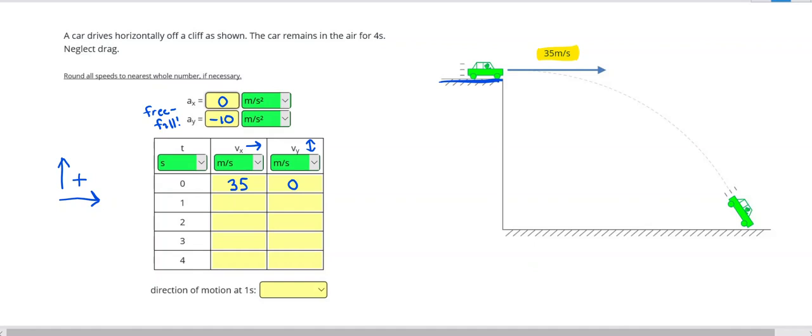This problem, we're given the time, unlike the last one where we had to figure out where it's going to land. So we can fill out that the vertical velocity is going to get 10 meters per second more negative each second. So negative 10, negative 20, negative 30, negative 40. And the horizontal speed, as always for a free fall problem, is going to remain constant.